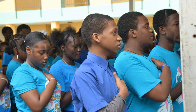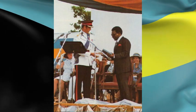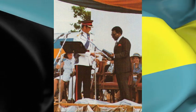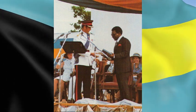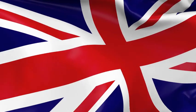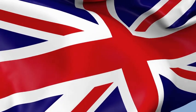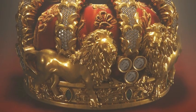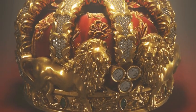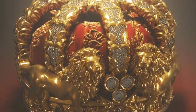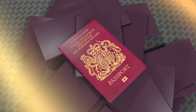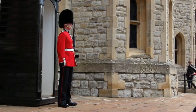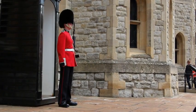Before independence in 1973, people in the Bahamas were ruled by Britain. They showed respect to the British national symbols and had British passports. They pledged their loyalty to England.